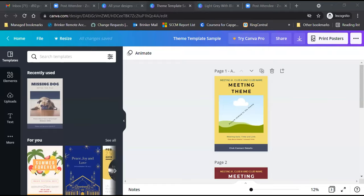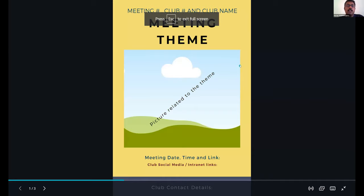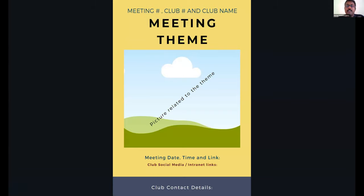Let me give you another simple example — a meeting poster. I've made a sample template to make it easy to understand. This is a very basic, minimal kind of meeting design. If you've just taken over as VPPR of a brand new club with no clue how to proceed, this can be your basic minimal template. The information you need: meeting number, club number, club name, meeting theme.